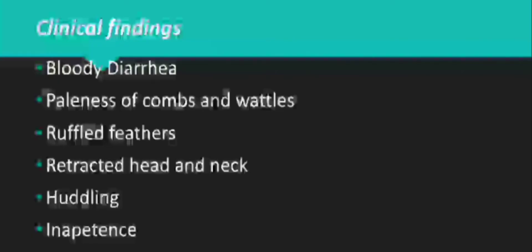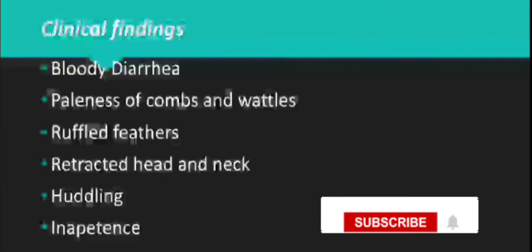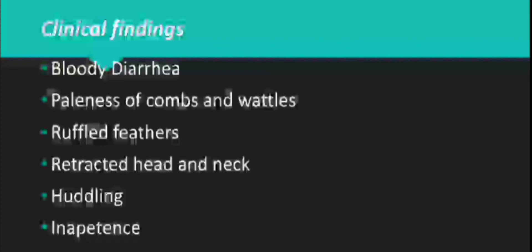The clinical findings include bloody diarrhea, paleness of the comb and wattles, ruffled feathers, and retracted head and neck. Huddling together — where chickens with coccidiosis tend to crowd together — is also a key sign.